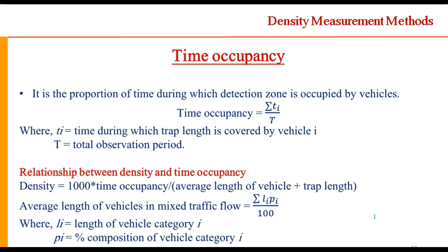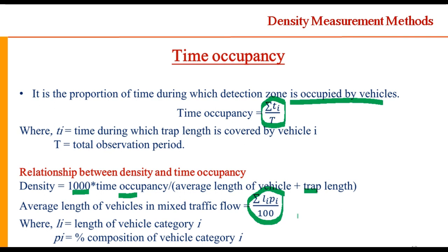Two indirect methods are time occupancy and area occupancy. Time occupancy is defined as the proportion of time during which the detection zone is occupied by vehicles: σ(t_i) / T, where t_i is the time during which the trap length is covered by vehicle i and T is the total observation period. Density can then be found as 1000 × time occupancy divided by the average length of vehicle plus trap length. In mixed traffic, average vehicle length can be estimated as Σ(L_i × P_i / 100), where L_i is the length of vehicle category i and P_i is its proportion.